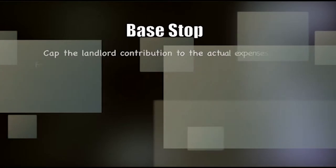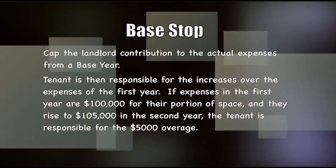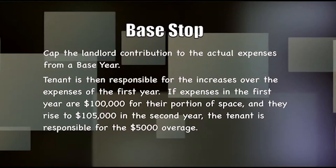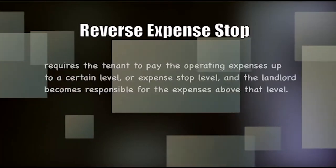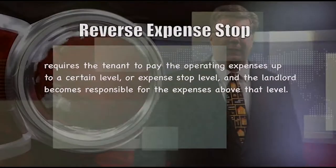Another method caps the landlord's contribution at the actual expenses from the base year — when the tenant takes possession — making the tenant responsible for increases above the first year's expenses. For example, if base-year expenses are $100,000 and rise to $105,000, the tenant pays the $5,000 increase. A reverse expense stop requires the tenant to pay operating expenses up to a certain level, with the landlord responsible for expenses above that level. Expense stops help protect the landlord's net operating income by shifting the risk of rising costs to the tenant.